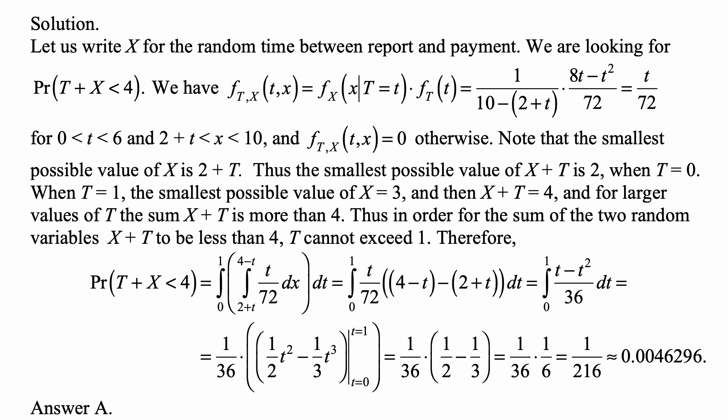that interval from 2+t to 4-t is a proper interval. It's not this way that 2+t could be more than 4-t because the largest possible value of t is 1, and then 2+t is 3, and 4-t is 3.